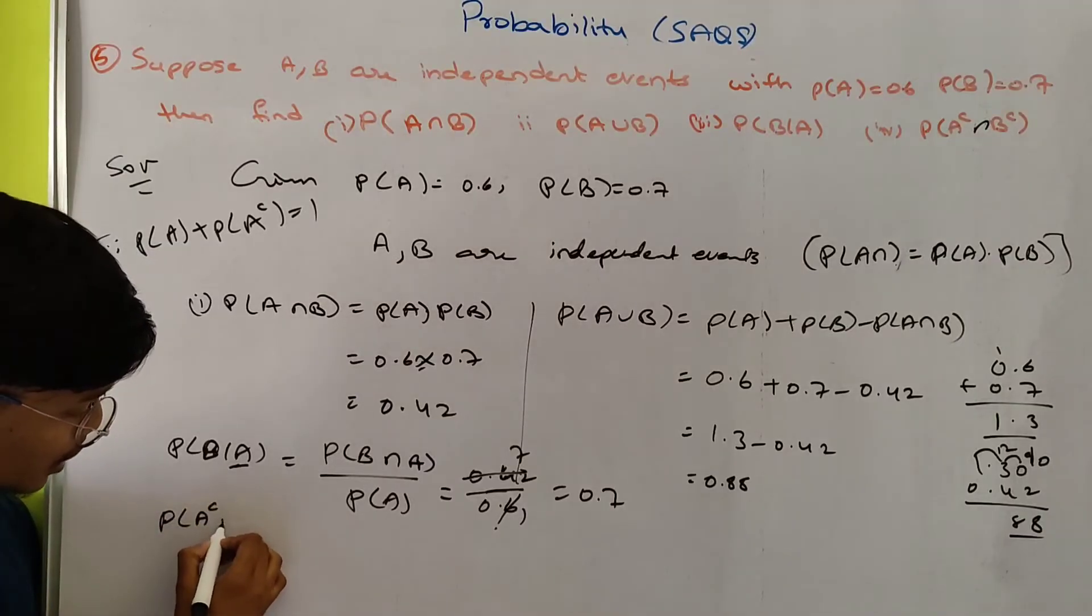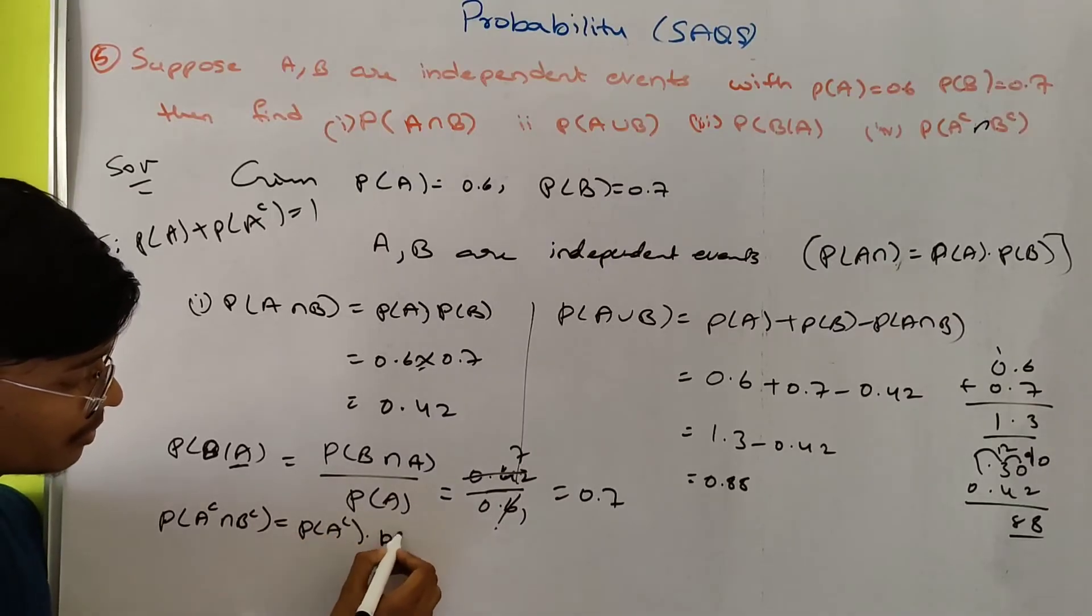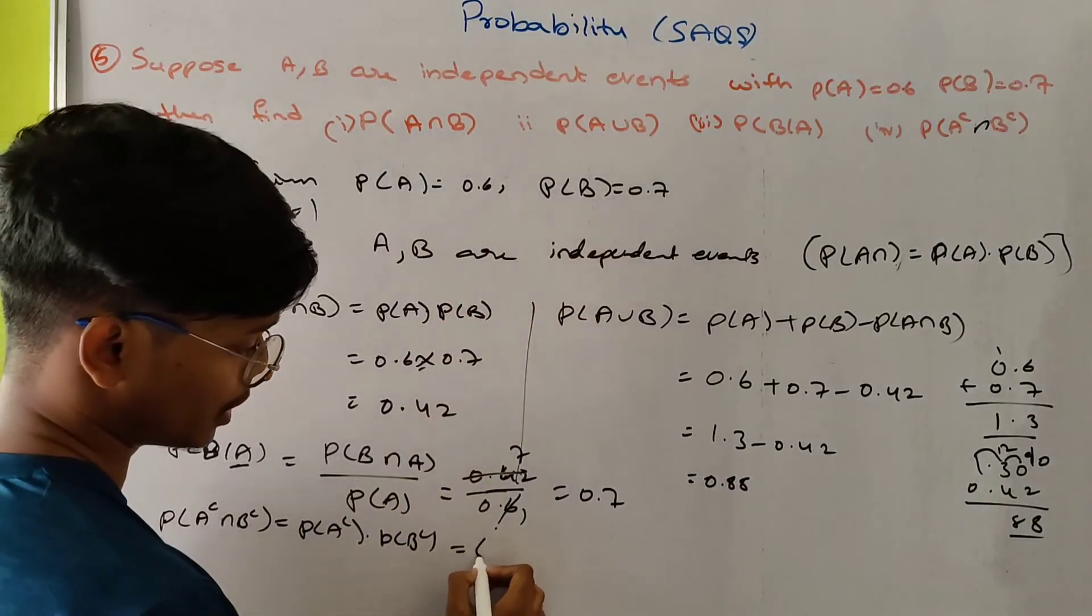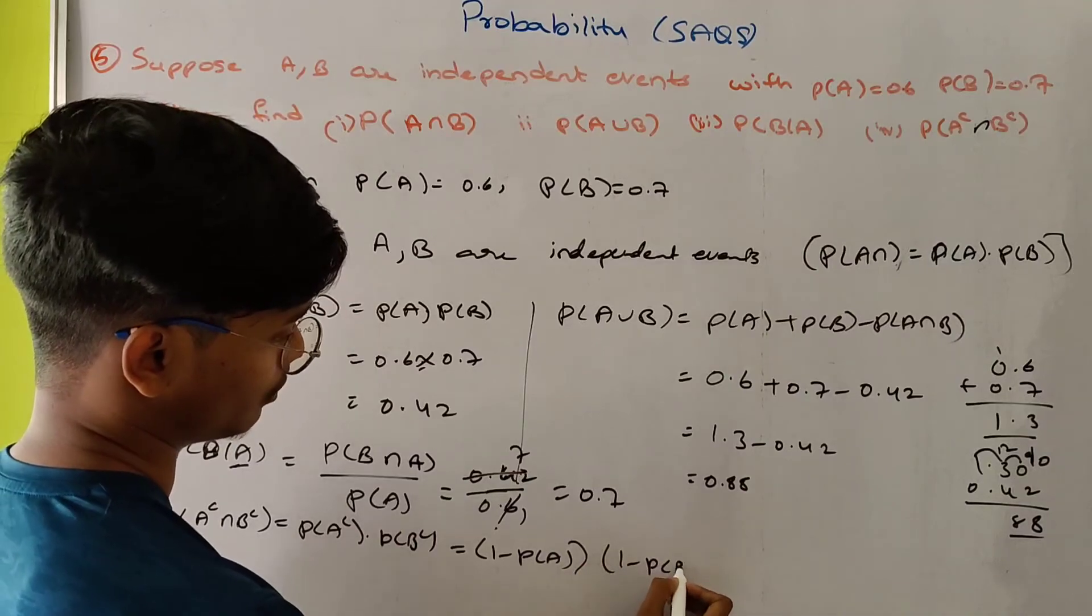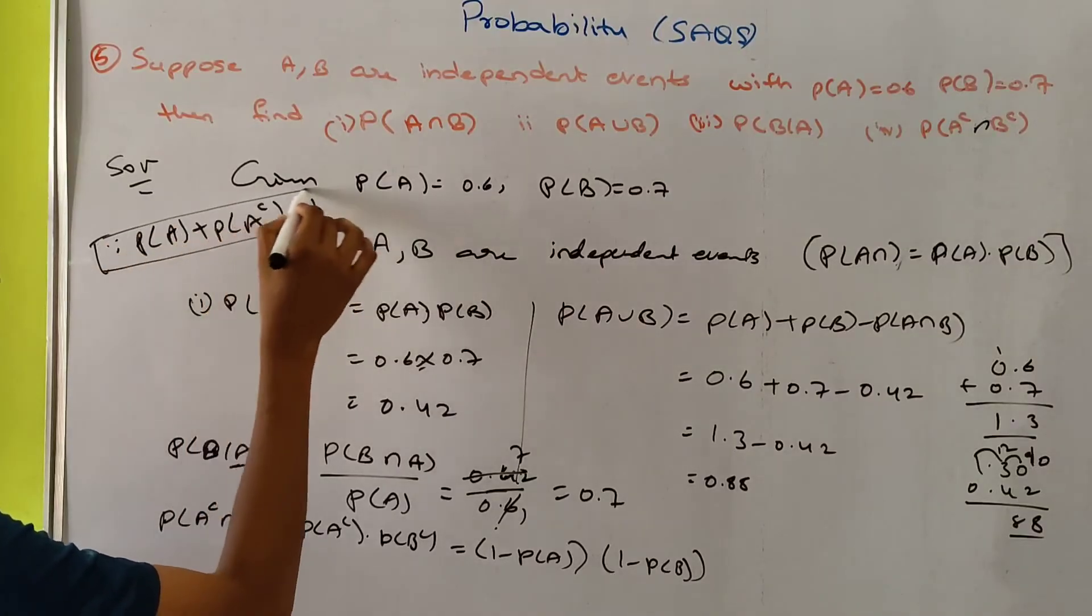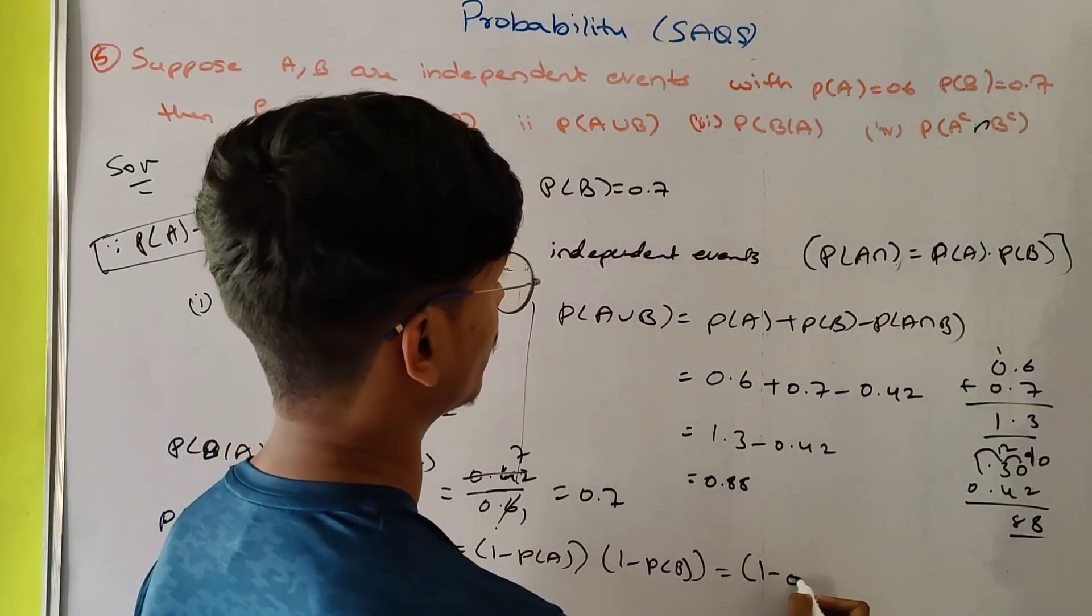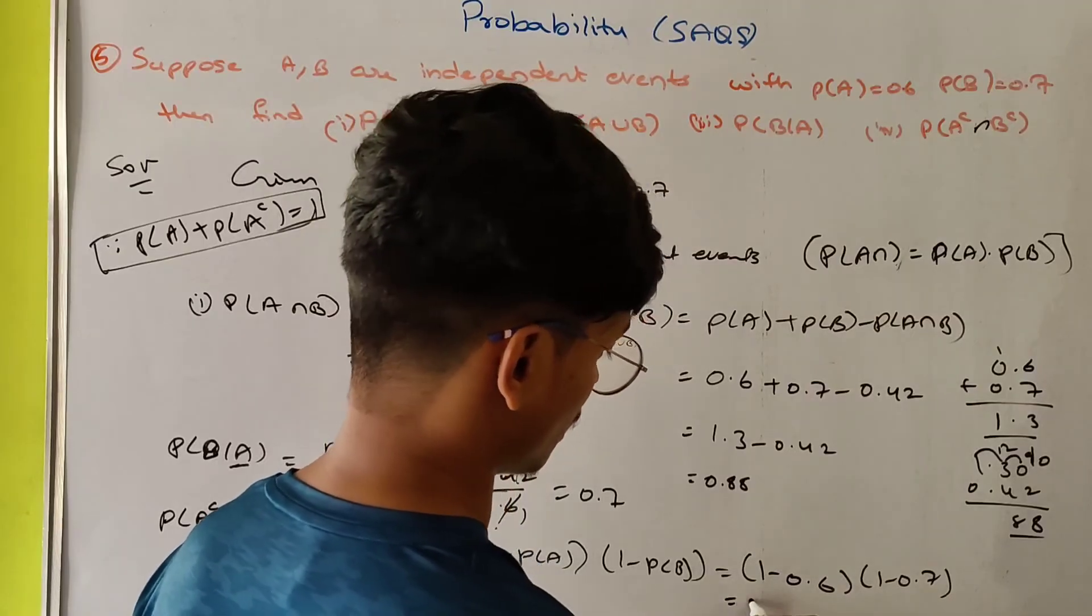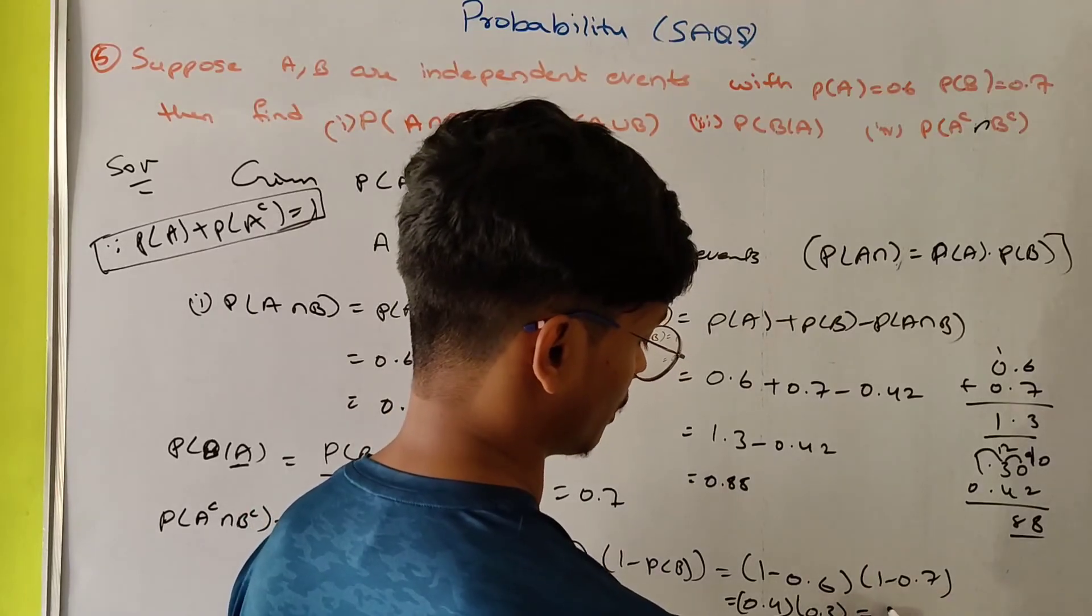P(A complement intersection B complement) = P(A complement) into P(B complement). These are independent events. Since P(A) plus P(A complement) equals 1, we have 1 minus 0.6 = 0.4 and 1 minus 0.7 = 0.3. So 0.4 times 0.3 = 0.12.